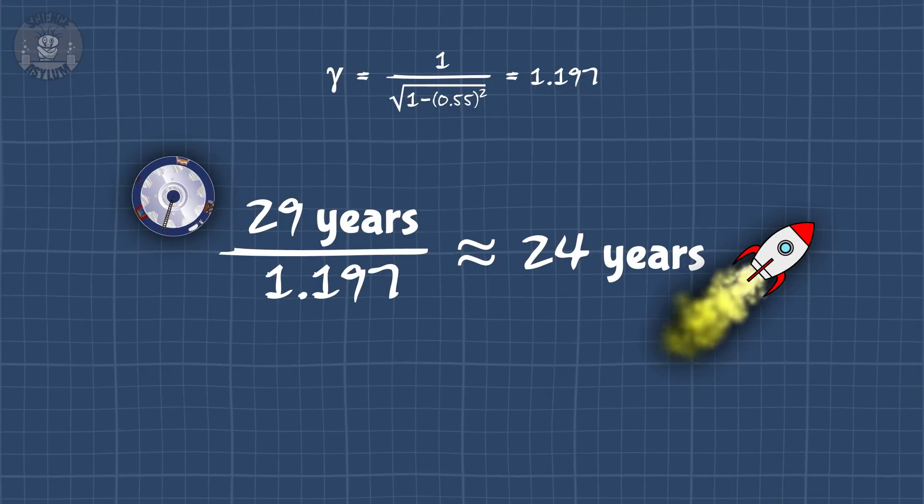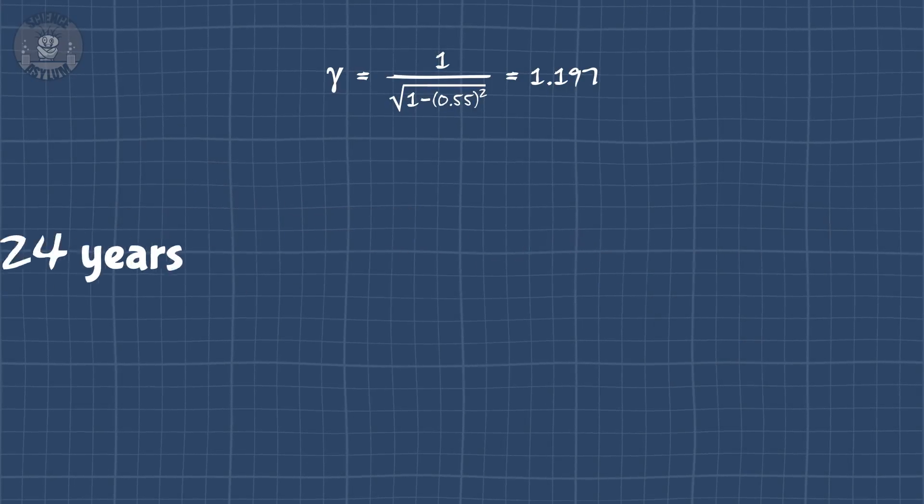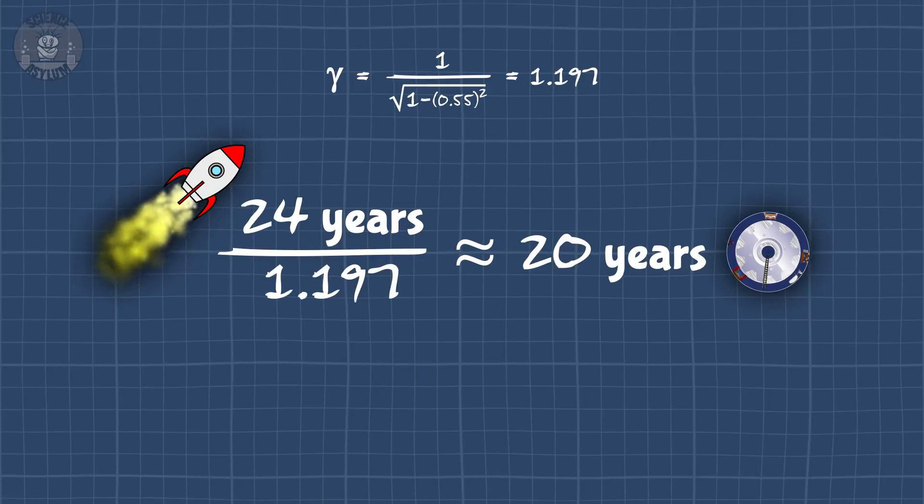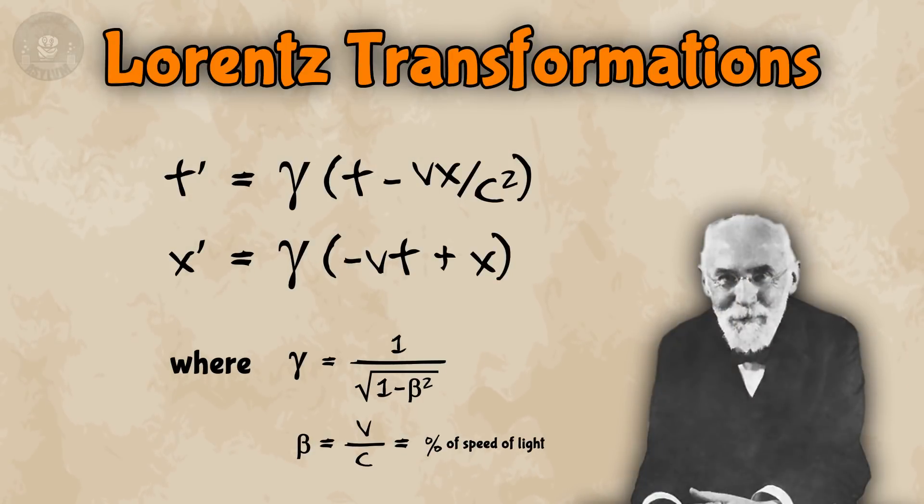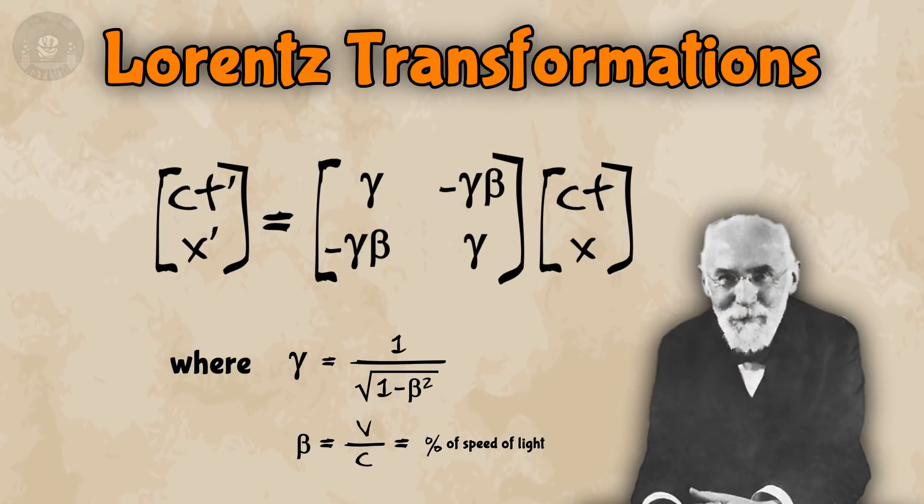When we do this, we get no perspective on what we're calculating. The number Rocket Clone calculated is valid. It's just not the answer to the question he was asking. You're not always calculating what you think you're calculating. It's safer to use the full transformations or, better yet, written in matrix form because you transform both space and time together. It gives you a better idea of what you're looking at.